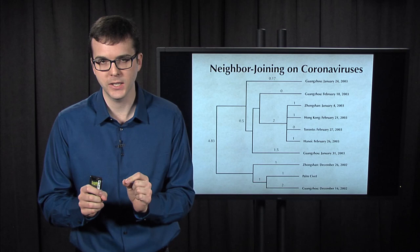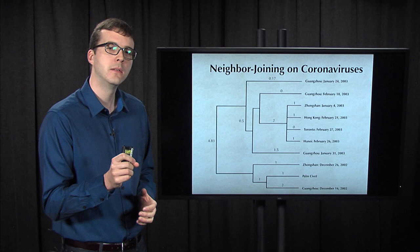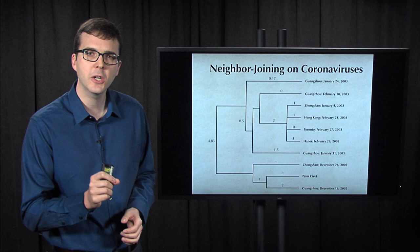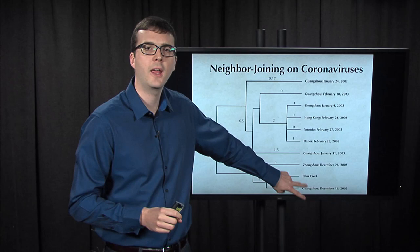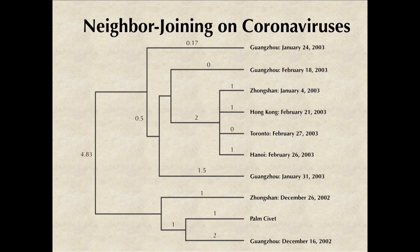When we do this, just from this small sample of 10 coronaviruses, we can see a very clear pattern of how the disease was passed from the palm civet to residents in southern China at the end of 2002, and then how it spread to other residents throughout the beginning of early 2003. And then we see the cases from the Metropole Hotel grouping together as the disease went global.